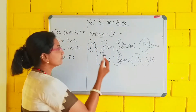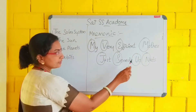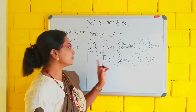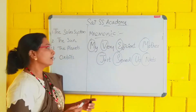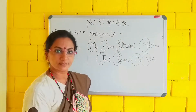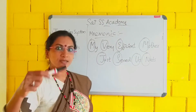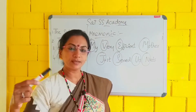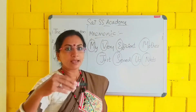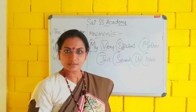Eight planets — Mercury, Venus, Earth, Mars, Jupiter, Saturn, Uranus and Neptune. What is the mnemonic? My very efficient mother just served us nuts. In coming chapters also — in geography, history, everywhere — if a lengthy portion is coming I will help you to learn that topic with mnemonics.